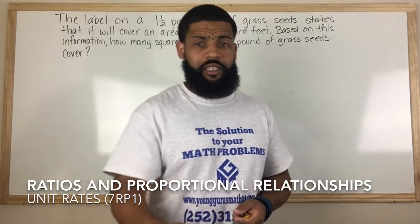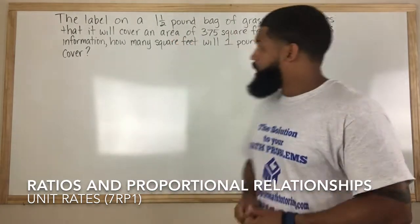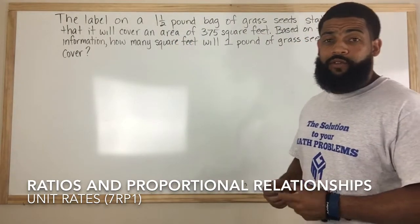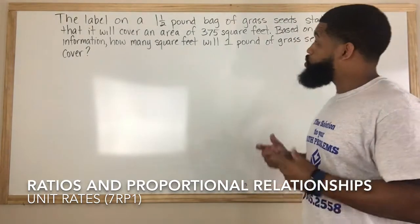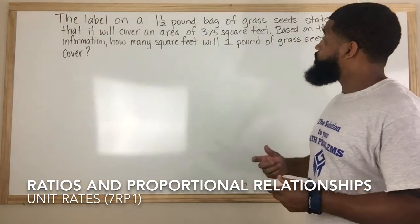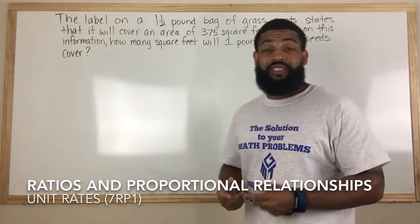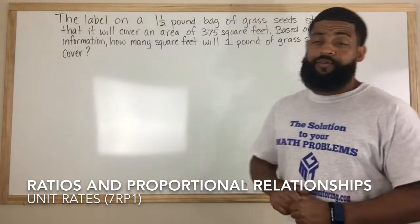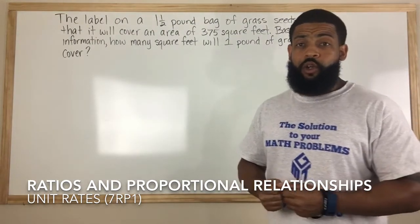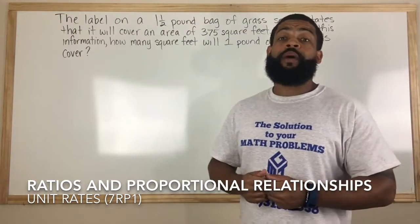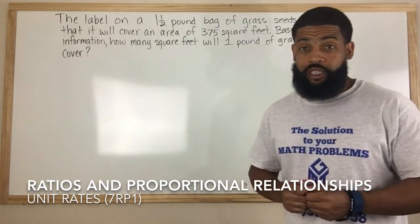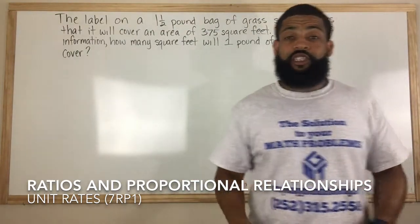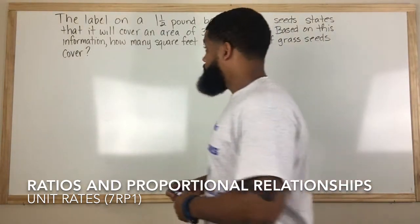Let's go ahead and get into this example. It says the label on a one and a half pound bag of grass seed states that it will cover an area of 375 square feet. Based upon this information, how many square feet will one pound of grass seed cover? So we need to write this information as a ratio.